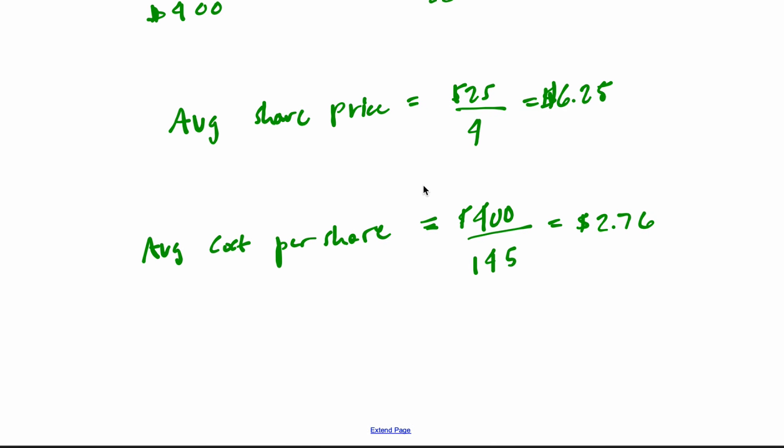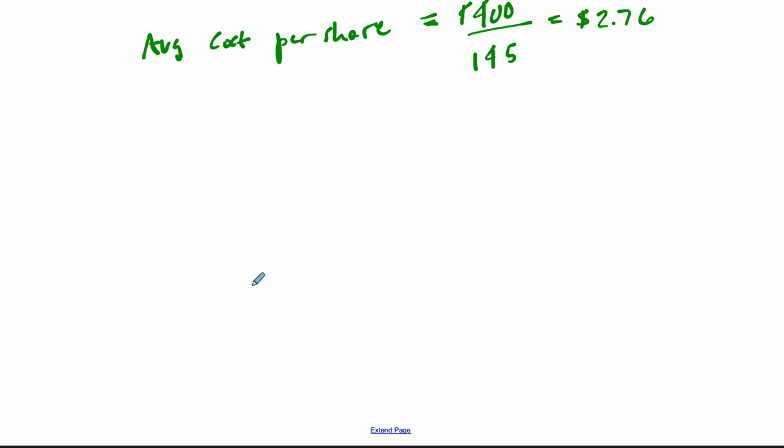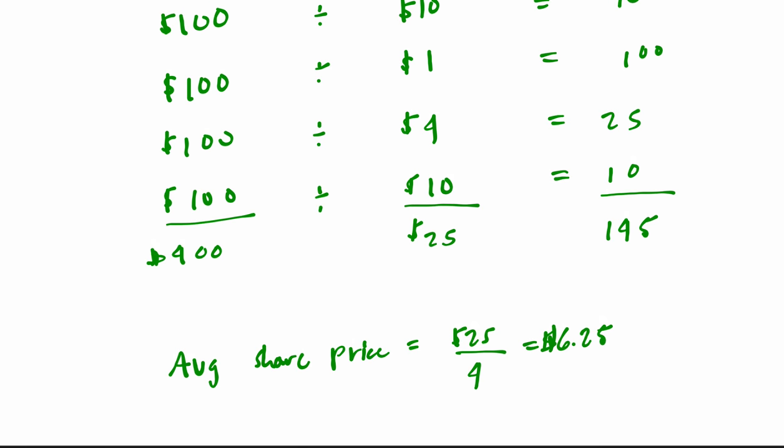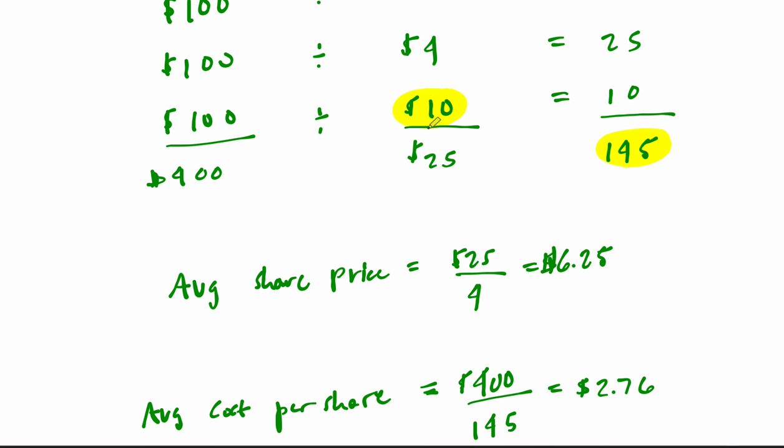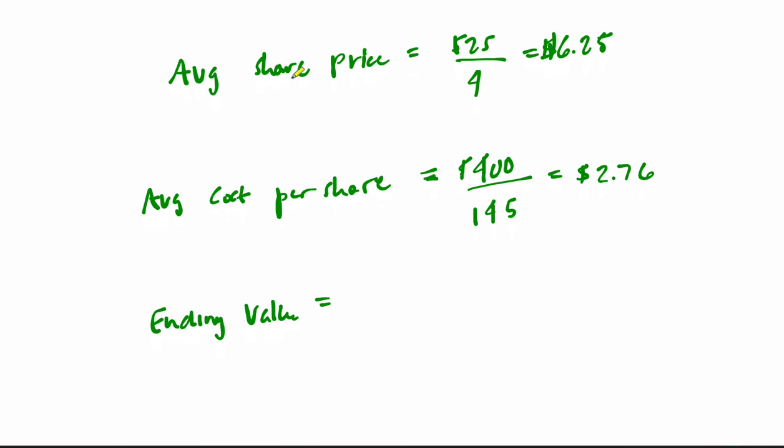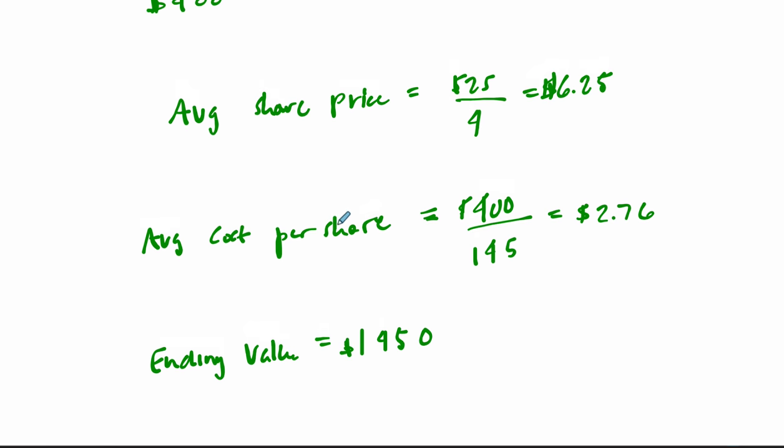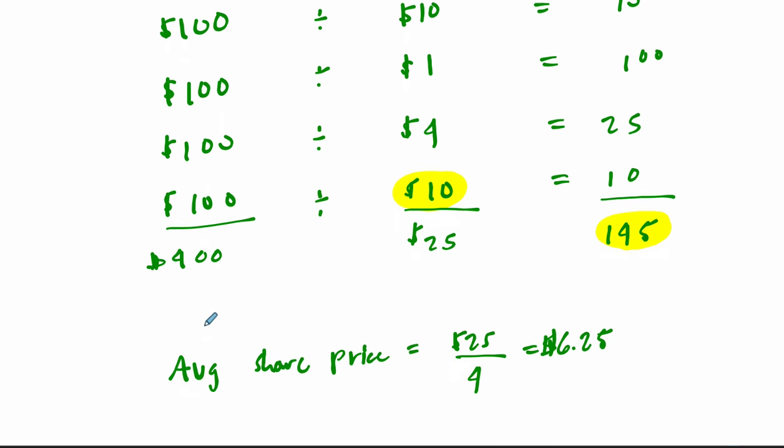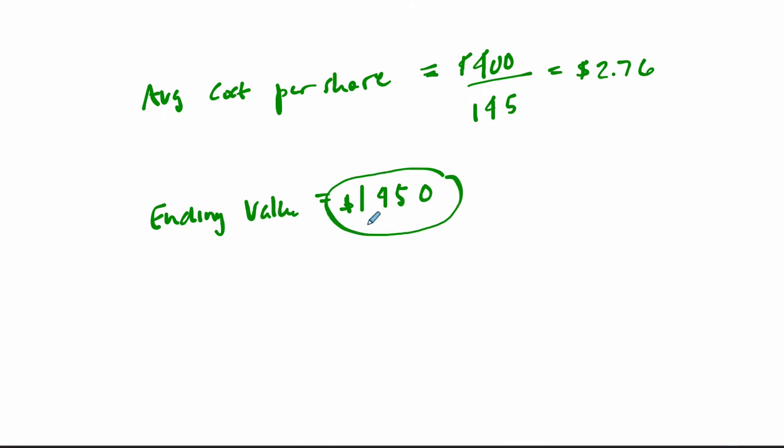And at the end here, we can say to ourself, what's our ending value? So we look at the number of shares times the last share value. So if you sold all 145 shares at its current value, to give you a sense of where you'd be at, you would be at $1,450, which is great because you only spent $400 to begin with. And now you have enough shares to sell it for this much. That's quite a profit.